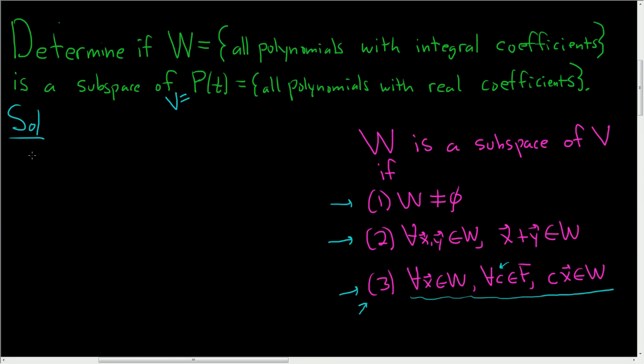We'll simply take F(t) = 2t² + 3t - 1. That's certainly in W because all of the coefficients are integers. And let's take the number 1/2, which is a real number.